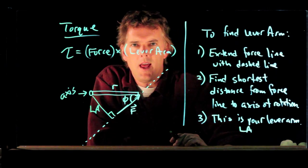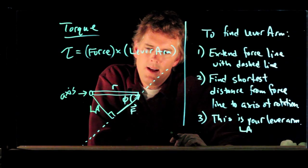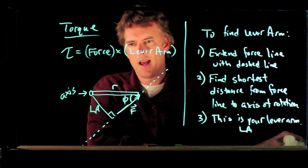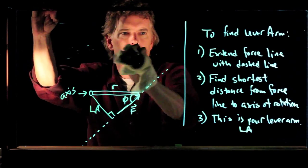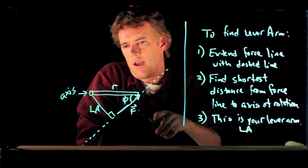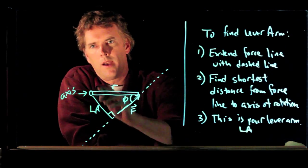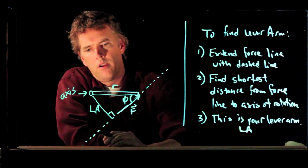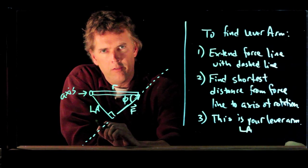We'll call our lever arm L-A. So L-A is a length. And what is the length? Well, we have a triangle here. We have R, we have L-A, and we have phi.